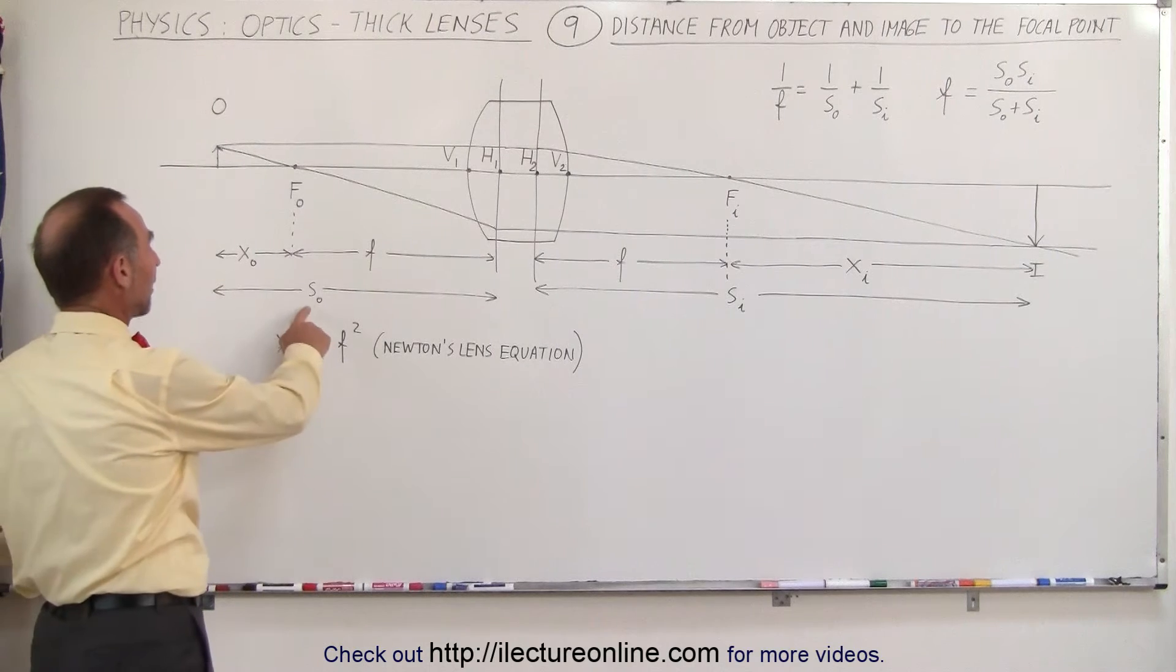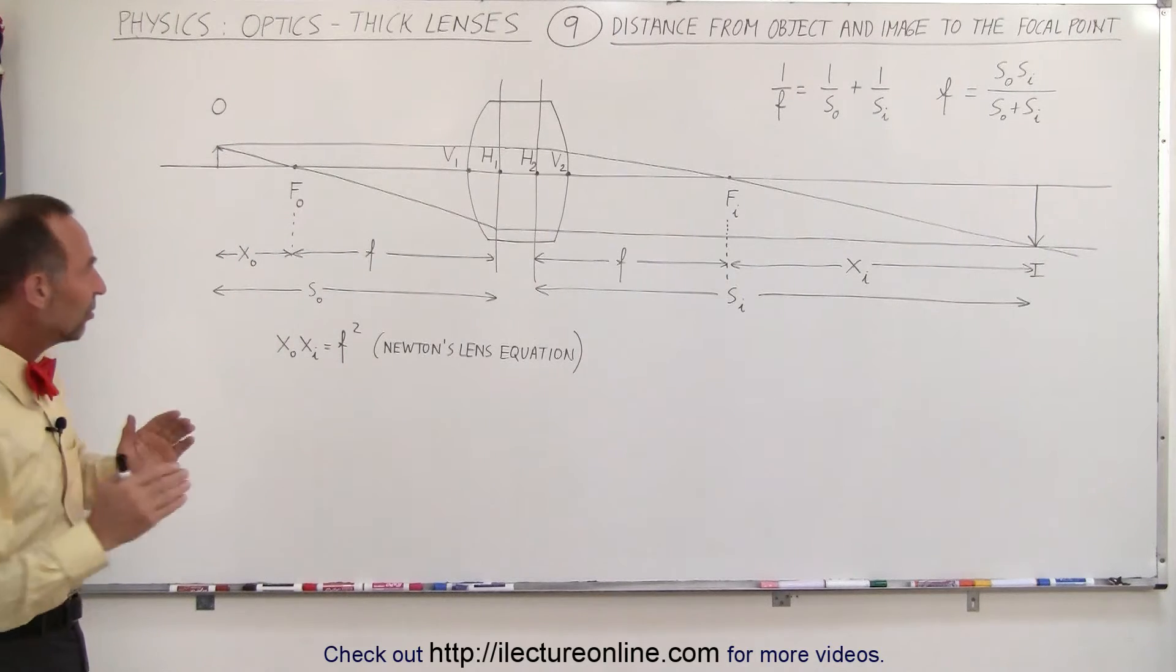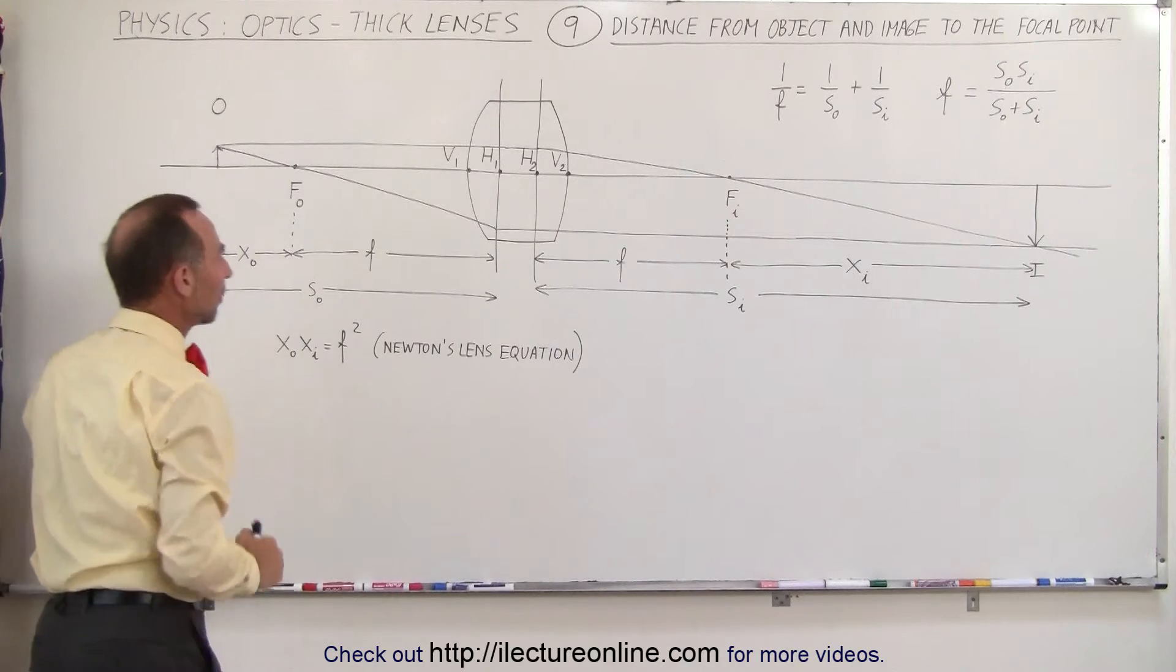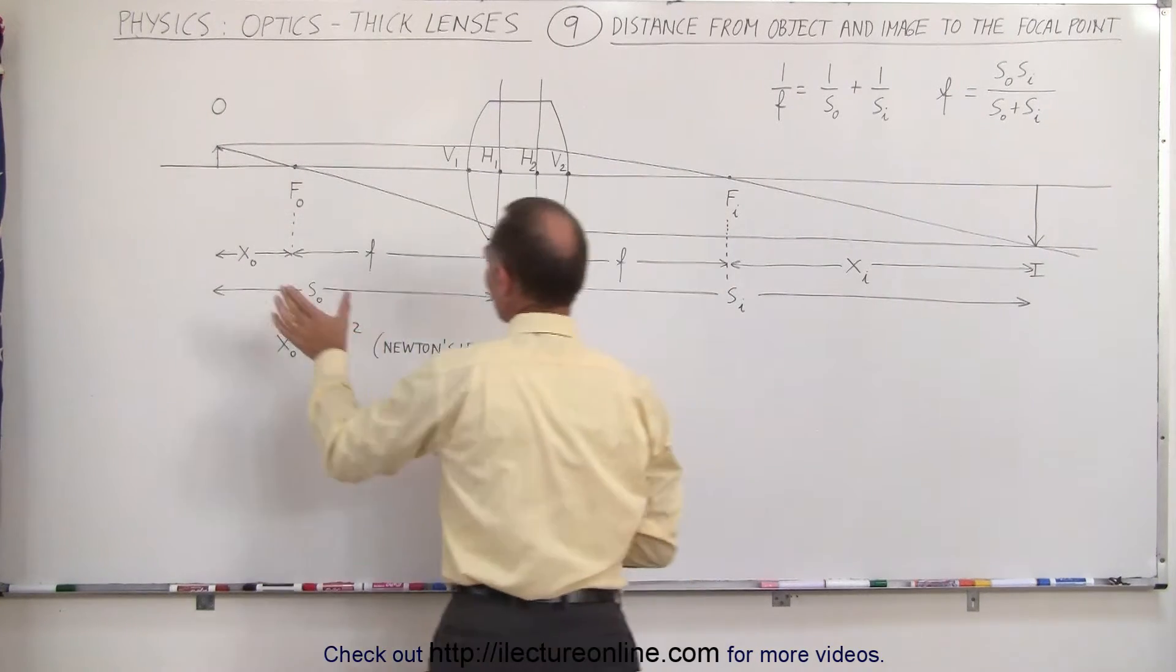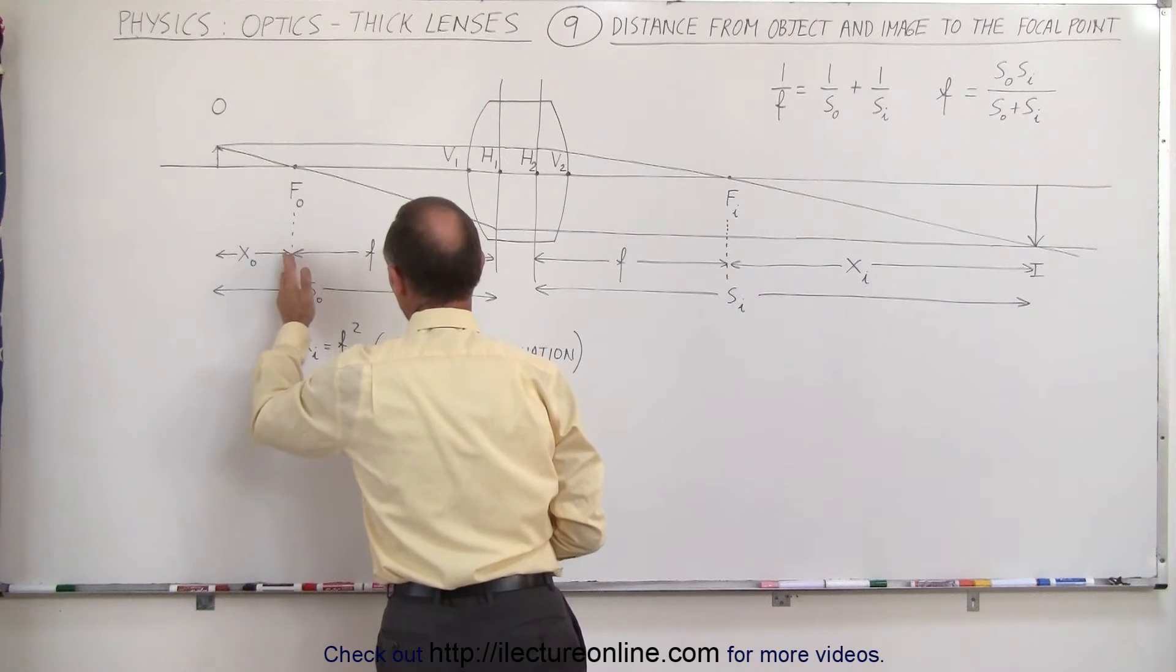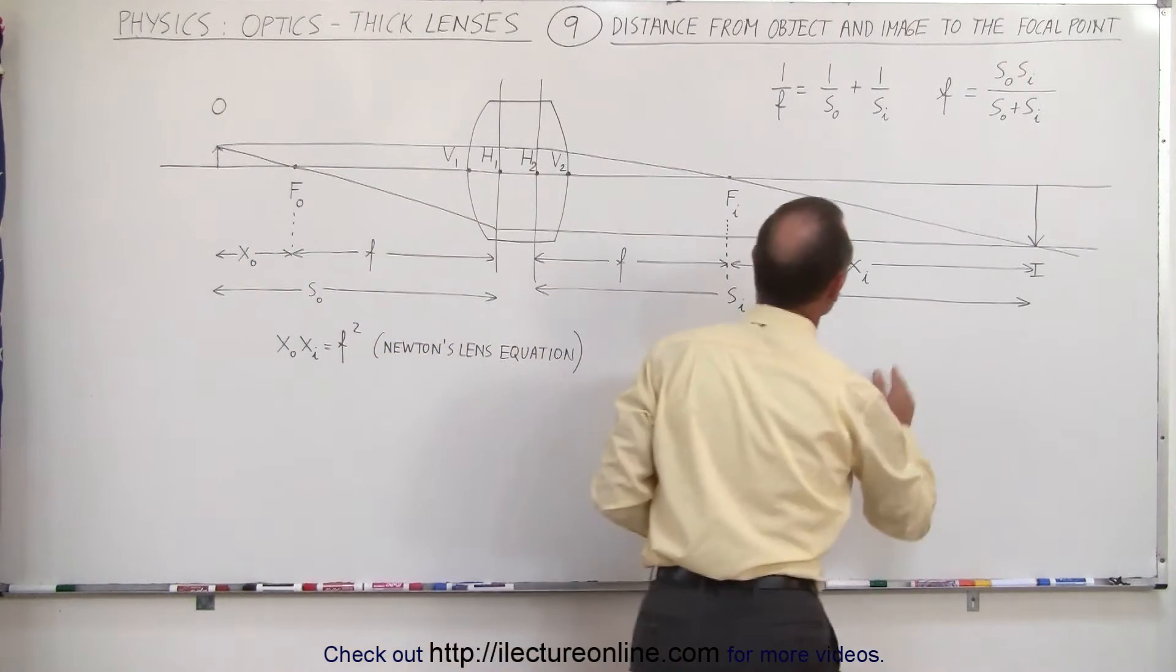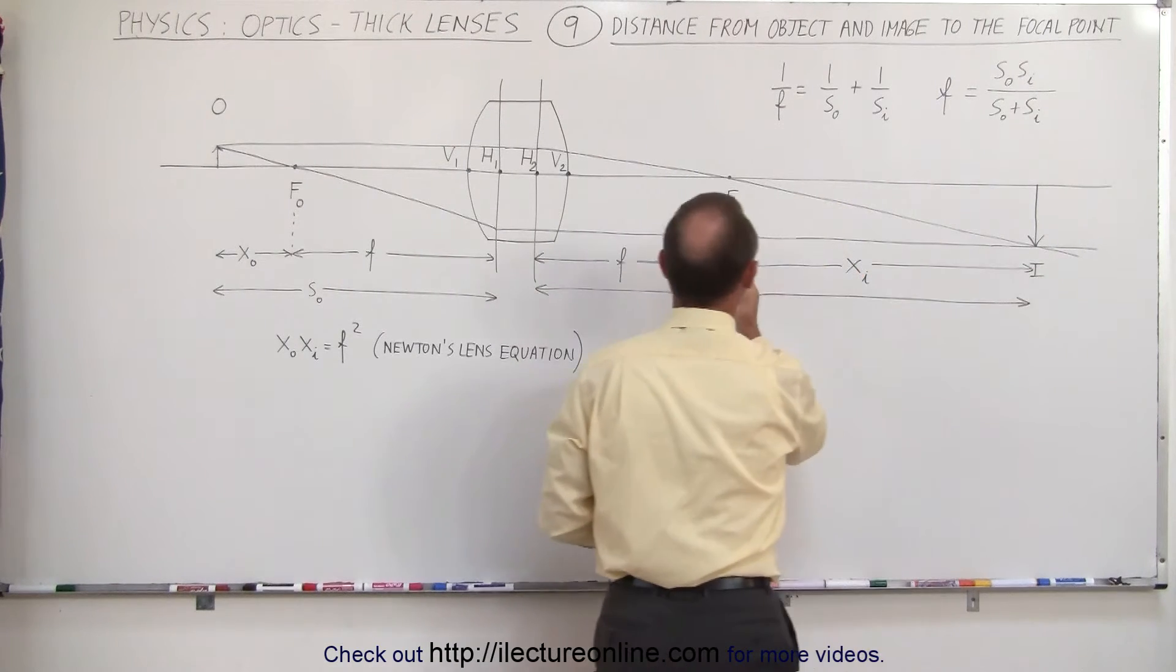Notice here we have s sub o as the object distance, s sub i as the image distance, and then the distances from the object to the focal point called x sub o for the object distance. Remember that's the object distance from the object to the focal point, not to the principal plane. And over here notice we have x sub i, which is the distance from the image to the focal point.